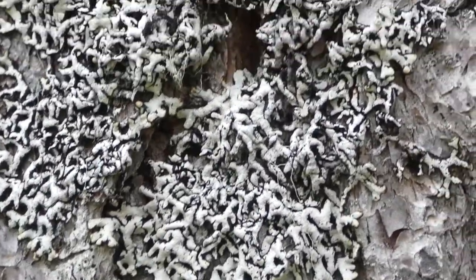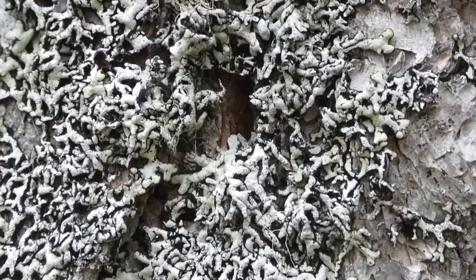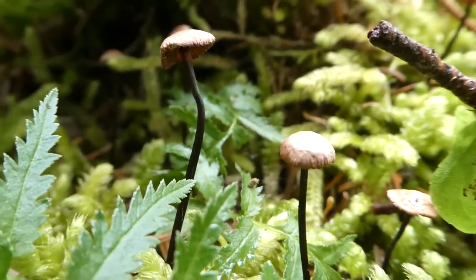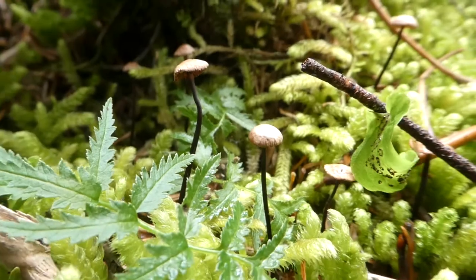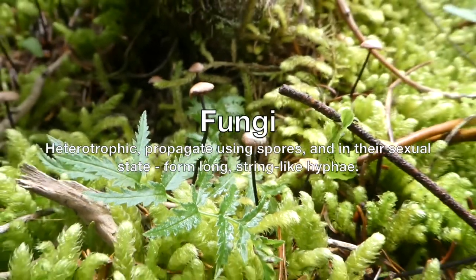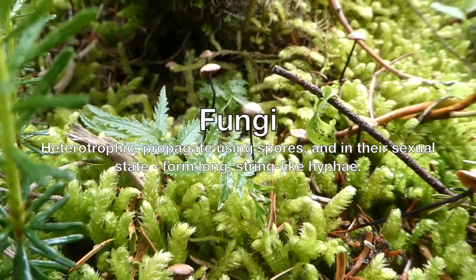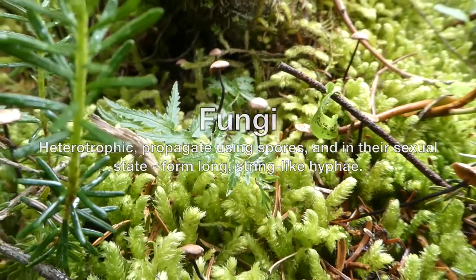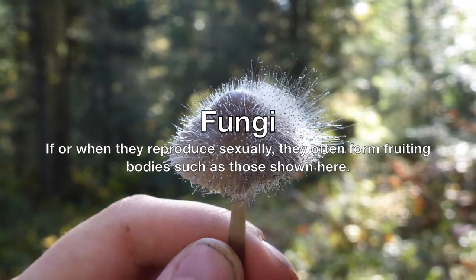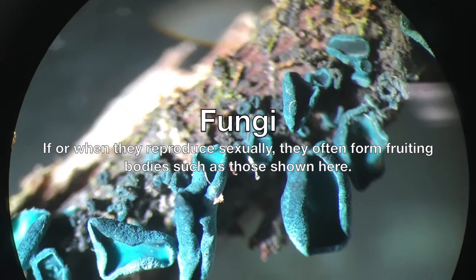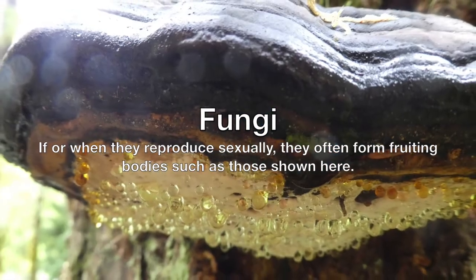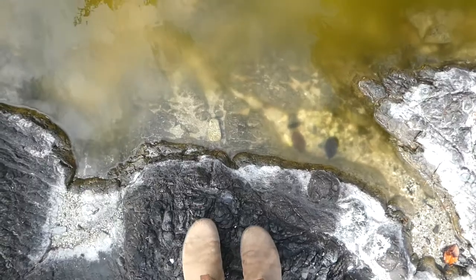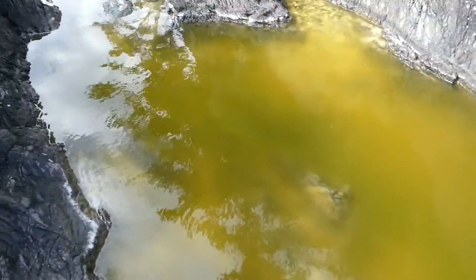What's a fungus? Fungi are extremely diverse, but they tend to be heterotrophic, propagate using spores, and in their sexual state form long string-like hyphae. If or when they reproduce sexually, they often form fruiting bodies such as those shown here.